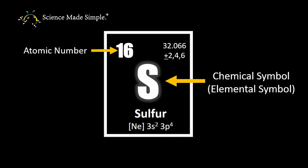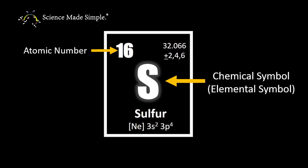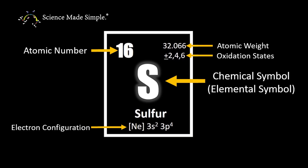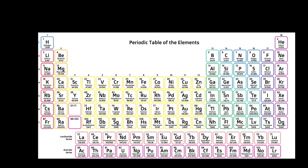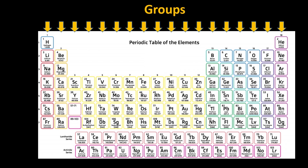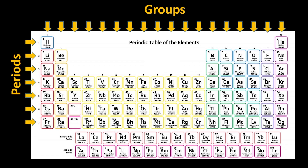The atomic number is typically the largest one displayed for any elemental symbol, and it is commonly located in the upper left-hand portion of an element's box. Other figures often featured in an element's box include its atomic weight, its oxidation states, the element's electron configuration, and the full elemental name. The common representation of the periodic table comes from the elements being grouped into columns and rows based upon recurrent chemical properties or periodic trends. The columns represent groups, and we call the rows periods.